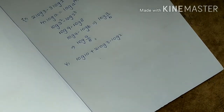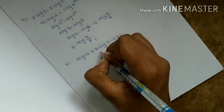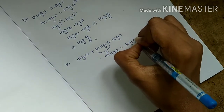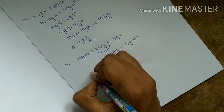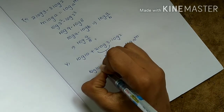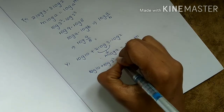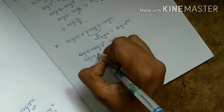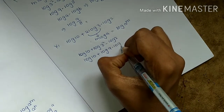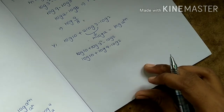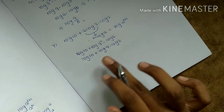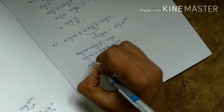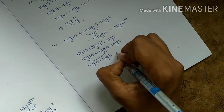Log 10 plus 2 log 3 minus log 2. First, using the formula m log a, we get log 10 plus log 3 squared minus log 2. Log 3 squared is 9. Using log a plus log b equals log a into b, we combine these terms.